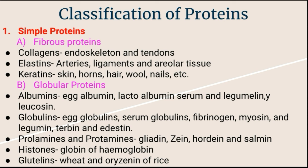Glutelins are common proteins of vegetable origin which are insoluble in water and salts but are soluble in dilute acids and alkalis. They are coagulated by heat. For example, wheat contains a very large amount of glutelins. Rice also contains oryzenin. These are the globular proteins known as glutelins.